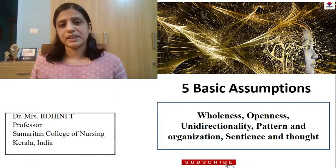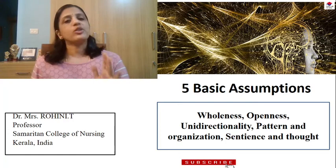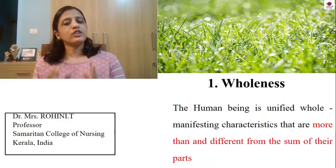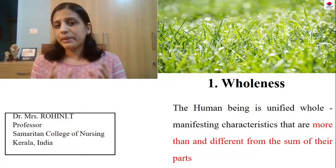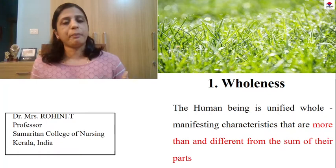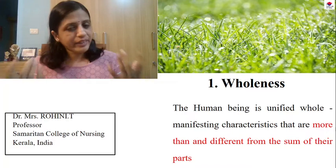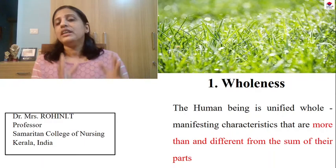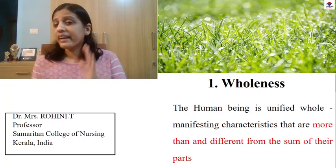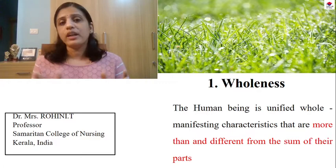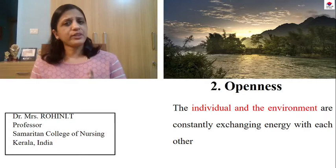The second thing you should write in your exam papers is about the assumptions — and there are 5 assumptions. What are they? Wholeness, openness, unidirectionality, pattern and organization, and sentience and thought. Number 1 is wholeness. As in the example of a patient with amputation, Rogers believed that a human being is whole — more than the sum of parts, and different from the sum of parts. Even if a person is blind, deaf, missing a leg, or paralyzed, Rogers says this person is more than the sum of parts. She looks at a person's energy field, not just their physical parts.